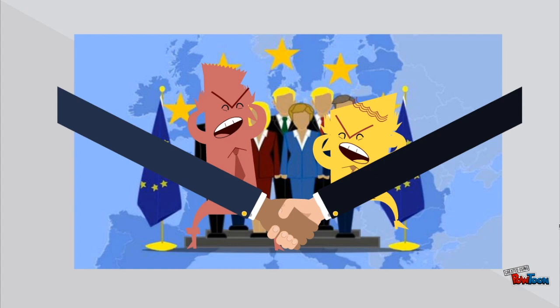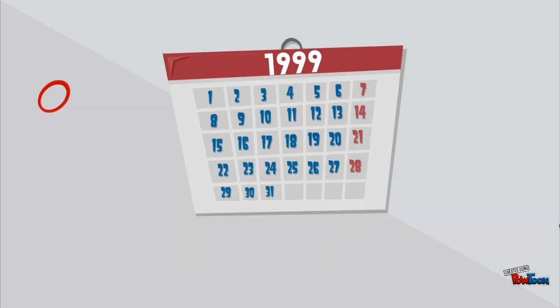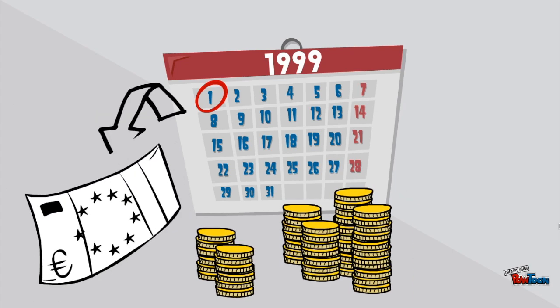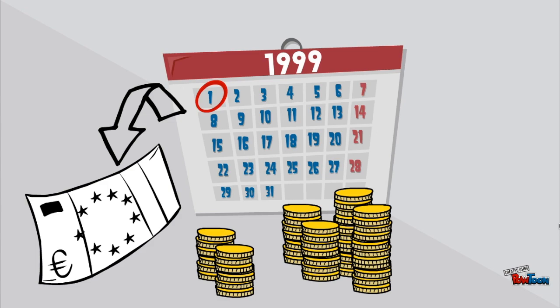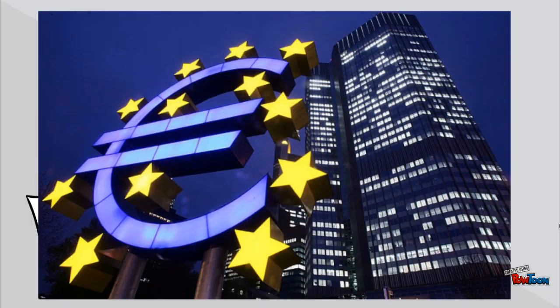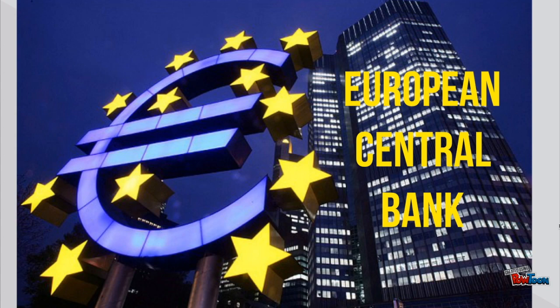Finally, with the Maastricht Treaty, the dream became true. However, it was not until 1999 that a single currency was launched — the Euro. The countries that adopted it had to abandon their former currencies to give control to a new institution, the European Central Bank, in charge of regulating the monetary policy of the Eurozone.